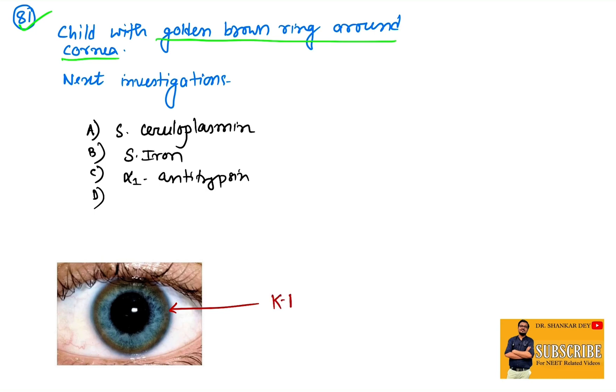This is nothing but a very popular image for competitive exams, that is the KF ring or Kayser-Fleischer ring. So where is it seen? This KF ring is seen in Wilson disease. Wilson disease is an autosomal recessive disease that is caused by mutation of ATP7B gene, which causes excessive copper accumulation in different organs like liver, brain, eye, etc.